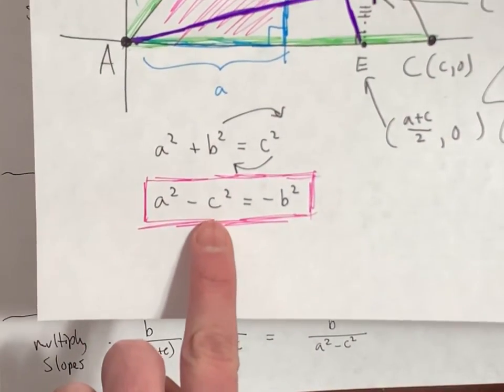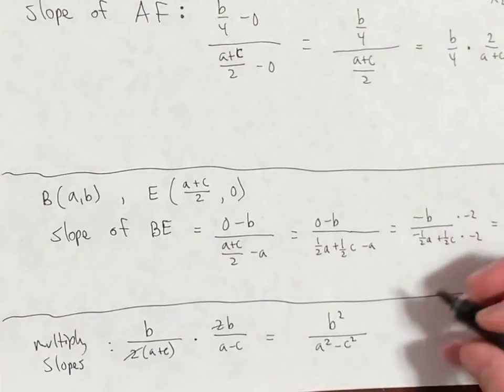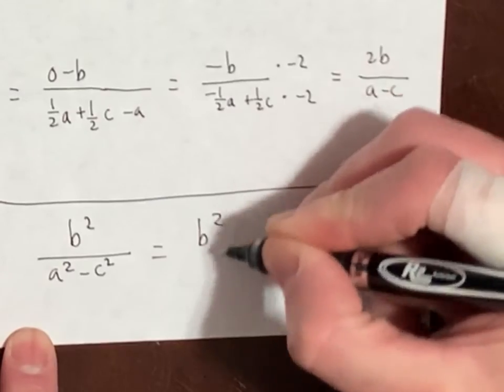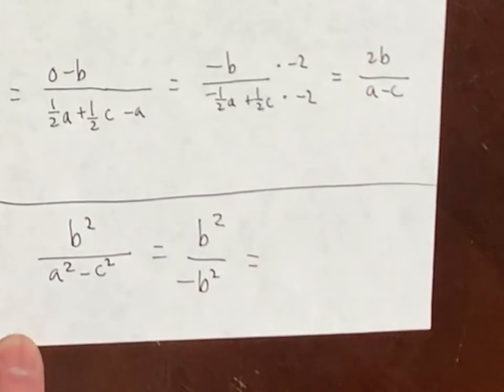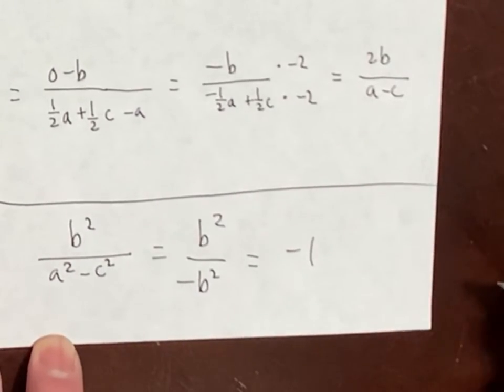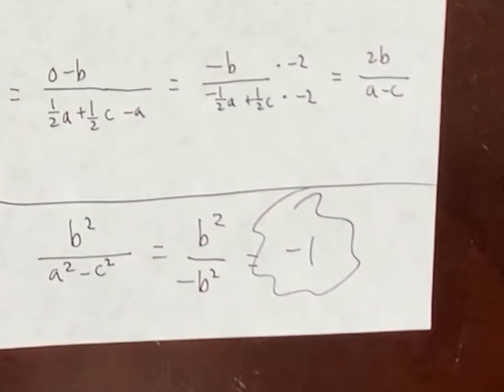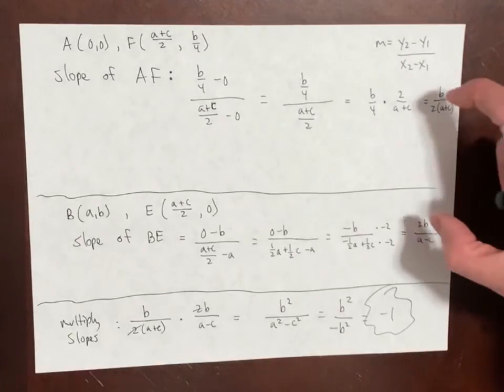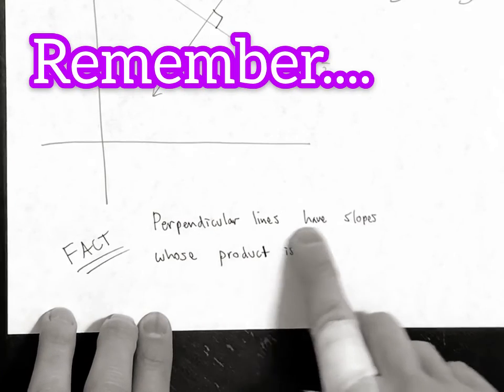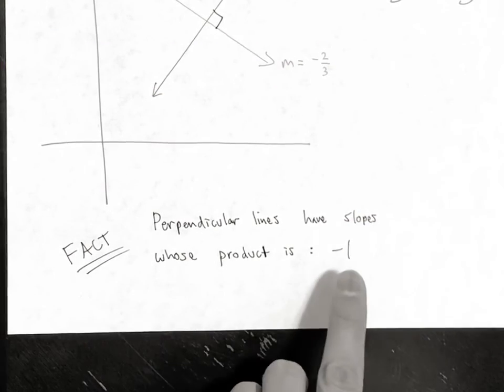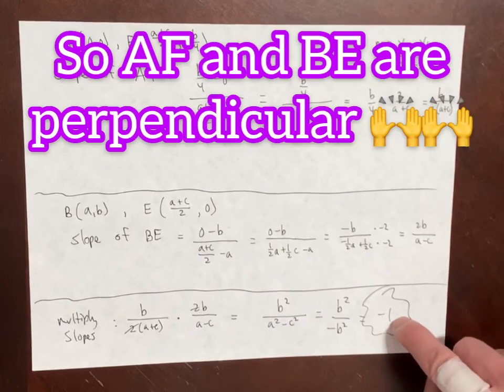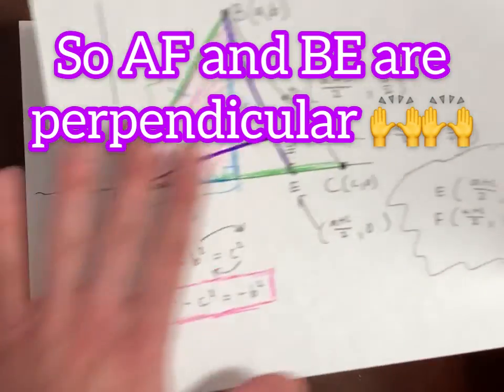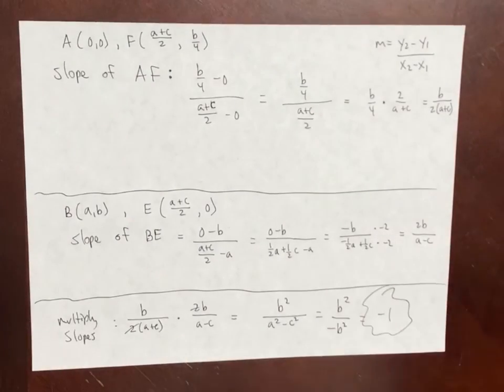And that's when this guy comes in clutch. Remember the pink box? A squared minus C squared is the same as negative B squared. So in the denominator, by substitution, we get negative B squared, which knocks out the B squared from the top. So it's just negative 1. That's how you prove or show that these two guys are perpendicular. By finding their slope, taking the two slopes, multiplying them, and showing that the product becomes negative 1 after you do some clever algebra and manipulations.